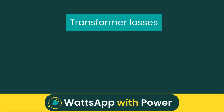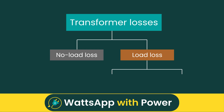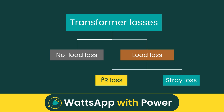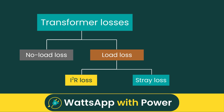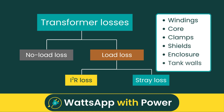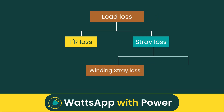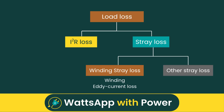Transformer losses fall into two main categories: no-load loss, also known as core loss, and load loss, also known as copper loss. Load loss includes I-squared R loss and stray loss. Stray loss is caused by stray magnetic flux affecting the windings, core, clamps, shields, enclosure, and tank walls. This loss can be further divided into winding stray loss, or winding eddy current loss, and other stray loss.